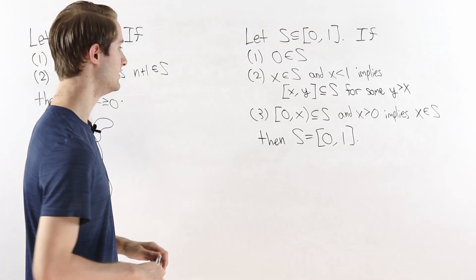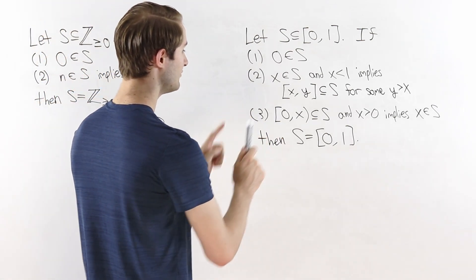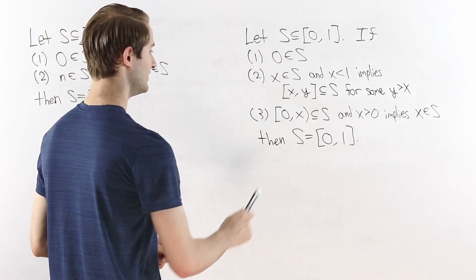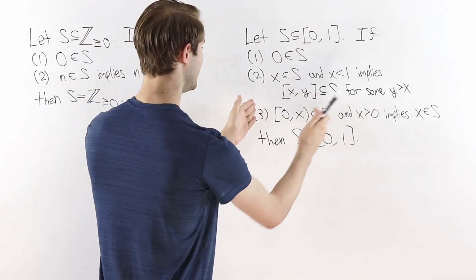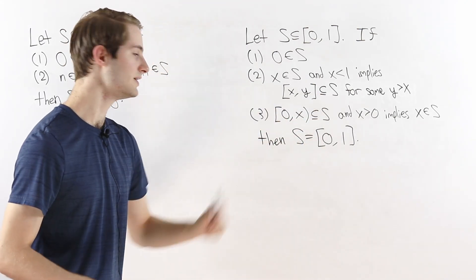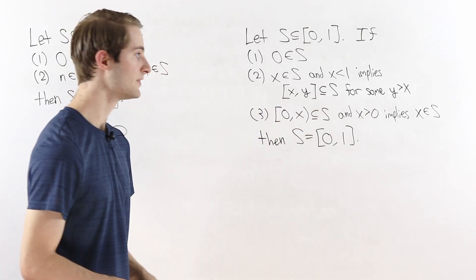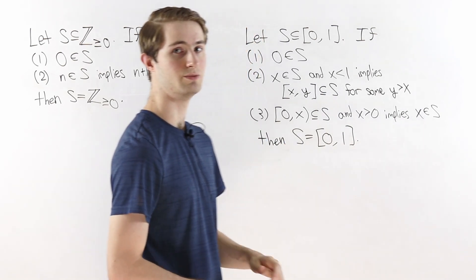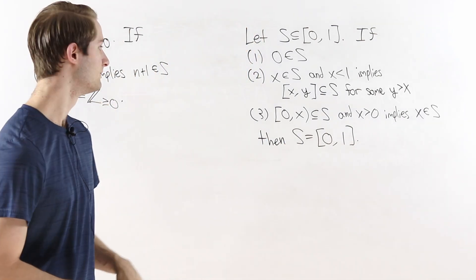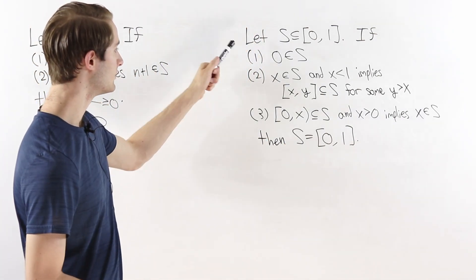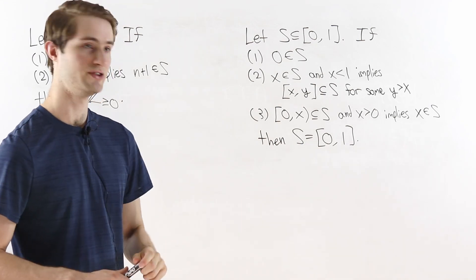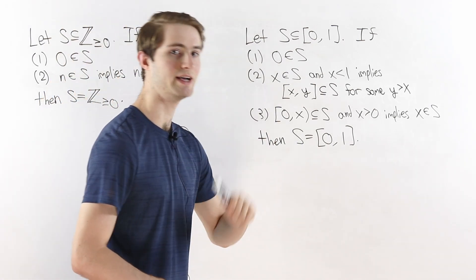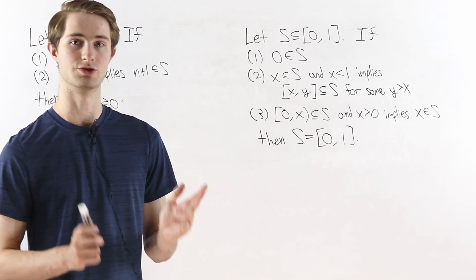The third condition is that if we have a half-open interval that starts at zero and ends at some x, where this entire half-open interval is in S, then that endpoint x has to be in the set as well. So if all three of these conditions are satisfied then that set S is the entire closed interval from zero to one.